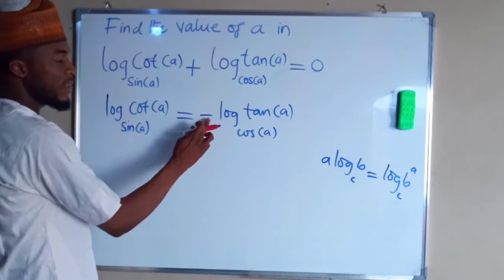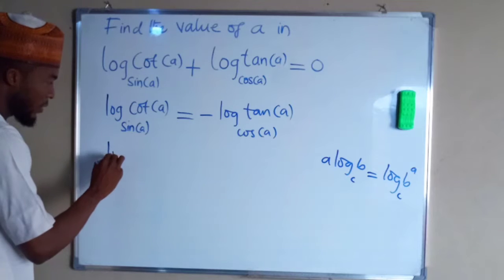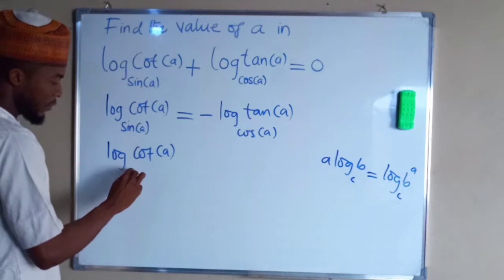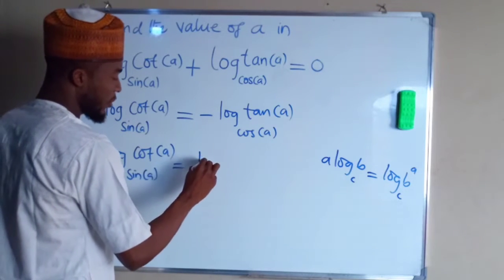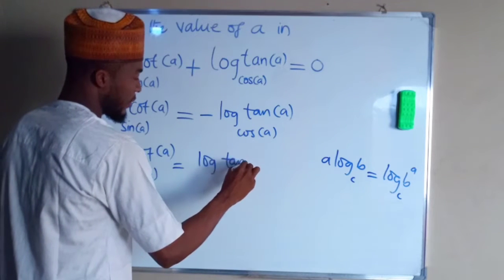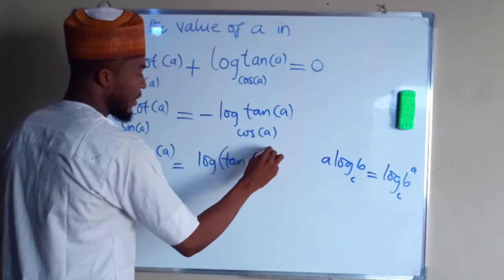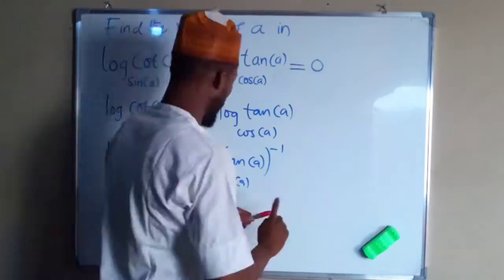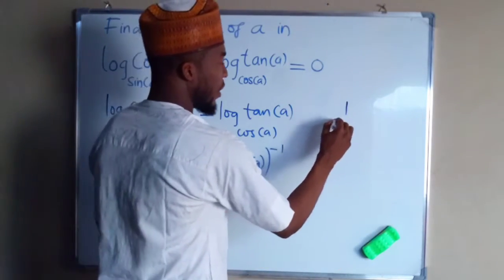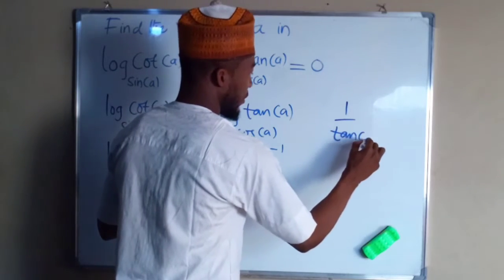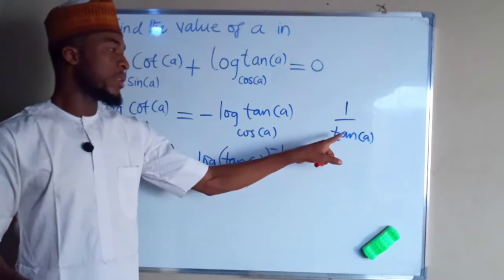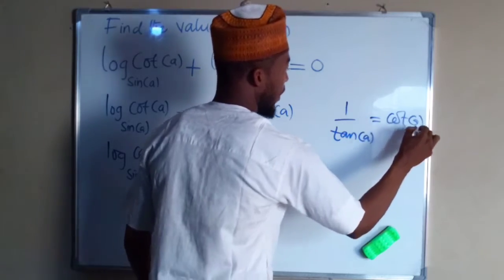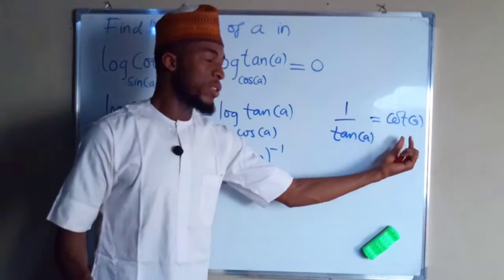So we are going to do the same to this negative 1. Log of cotangent A with the base of sine A is going to be equal to log of tangent A raised to the power of negative 1. This is the same thing as 1 divided by tangent of A, and 1 divided by tangent A from trigonometric ratios is the same thing as cotangent of A. We are going to substitute this with cotangent of A.